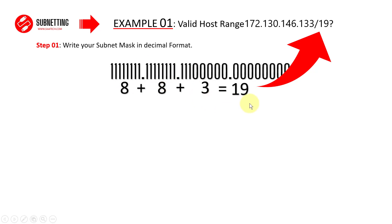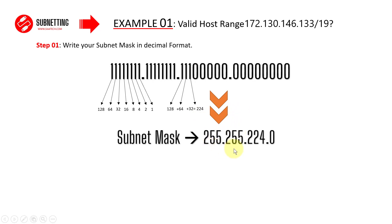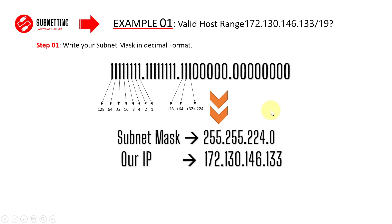Now let's write this binary in decimal format in order to get the subnet mask. As mentioned, each bit represents a number — calculating all bits gives 255, 255, and for the third octet: 128 plus 64 plus 32 gives 224. So our subnet mask will be 255.255.224.0. Now we are ready. Our IP address as given in the question is 172.130.146.133.